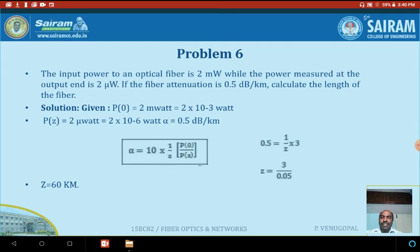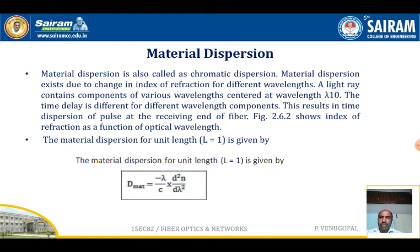Next is material dispersion, also called chromatic dispersion. Material dispersion exists due to change in the index of refraction for different wavelengths. A light ray contains components of various wavelengths centered at wavelength lambda. The time delay is different for different wavelength components, resulting in time dispersion of the pulse at the receiving end of the fiber.